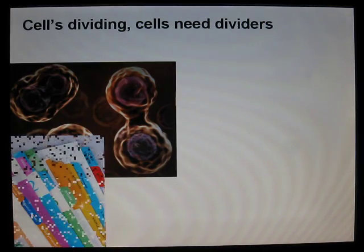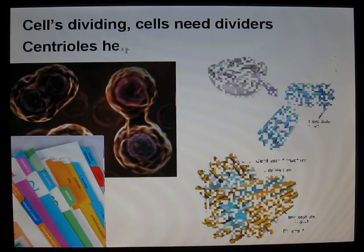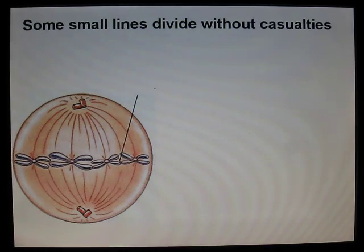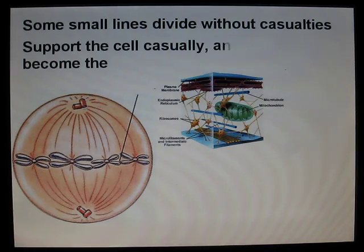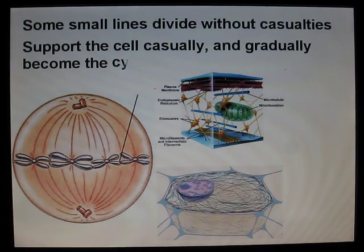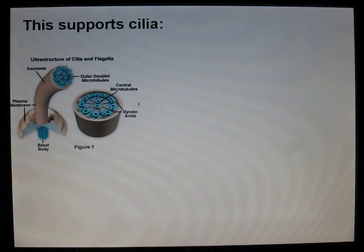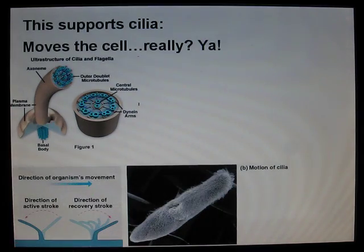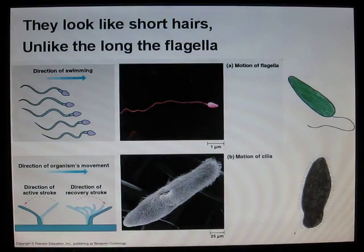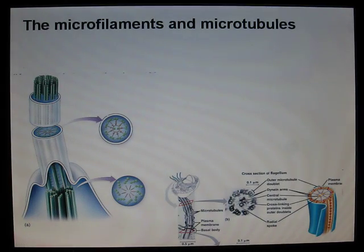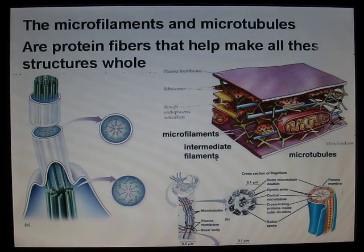Cells dividing, cells need dividers — central structures help cells divide quickly. Some small fibers divide without casualties, support the cell casually, and gradually become the cytoskeleton. This supports cilia, moves the cell — they look like short hairs, unlike the long flagella. The microfilaments and microtubules are protein fibers that help make all these structures whole.